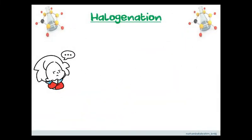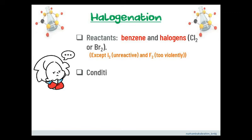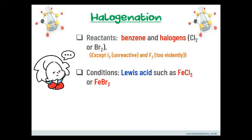The first reaction is halogenation. The reactants must contain benzene and halogens, Cl2 or Br2. Iodine and fluorine are exceptions, because I2 is unreactive while F2 is too violent. The condition for the reaction to occur must include a Lewis acid, such as iron(III) chloride or iron(III) bromide.